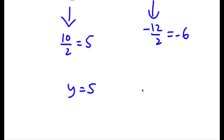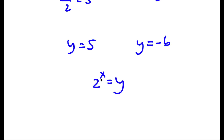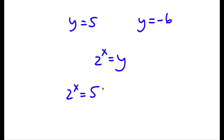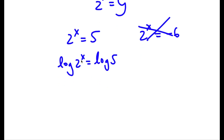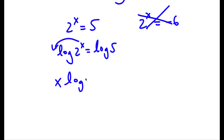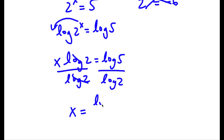So y equals 5 and y equals negative 6. Now remember, 2 to the power of x is equal to y, so this gives us two equations: 2 to the power of x equals 5, and 2 to the power of x equals negative 6. Well, 2 to the power of x equals negative 6 is impossible because you can't take the power of a positive number and get a negative. So I'm simply left with 2 to the power of x equals 5. To solve this, I can take log on both sides, then move my exponent: x times log 2 is equal to log 5. Dividing both sides by log 2, I get x is equal to log 5 over log 2.